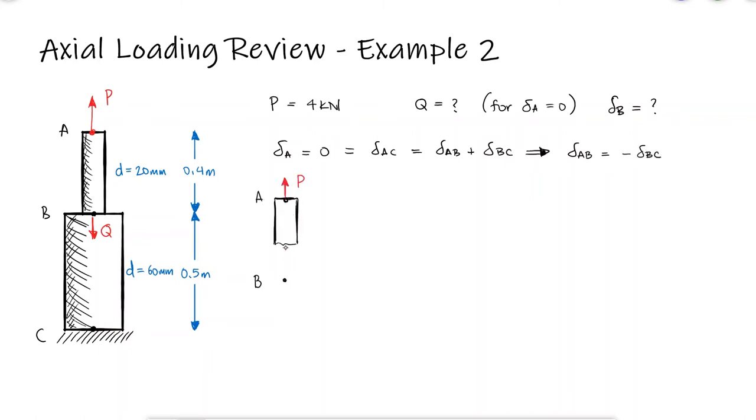The internal force between A and B is equal to P in tension, meaning a positive P. The deflection of A with respect to B can therefore be found if I look up the elastic modulus of aluminum, which is 70 gigapascals.